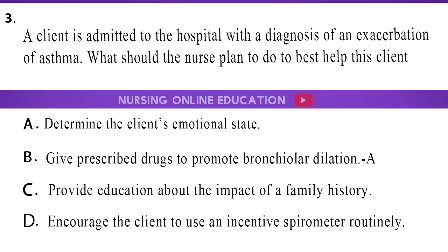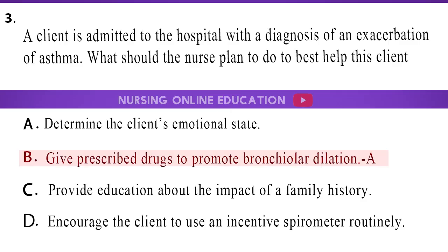Question 3: A client is admitted to the hospital with a diagnosis of an exacerbation of asthma. What should the nurse plan to do to best help this client? A. Determine the client's emotional state. B. Give prescribed drugs to promote bronchiolar dilation. C. Provide education about the impact of a family history. D. Encourage the client to use an incentive spirometer routinely. The answer is option B: Give prescribed drugs to promote bronchiolar dilation.